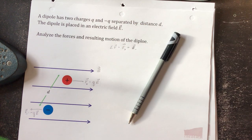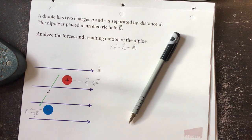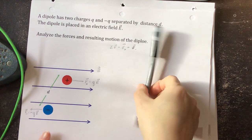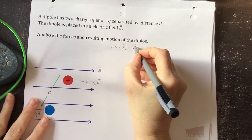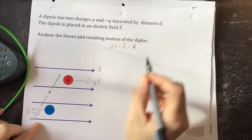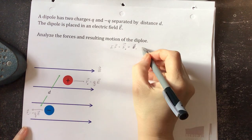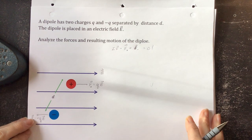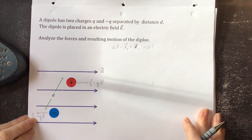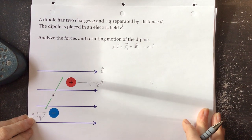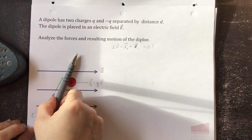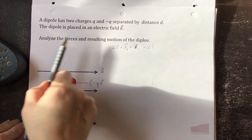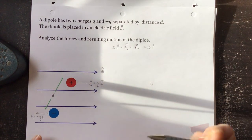So if we want to think about the resulting motion and do a force analysis, let's find the net force — the force on the positive plus the force on the negative. Those two are equal and opposite, so it just equals zero. What does it mean that the net force is zero? It means overall that our dipole is not going to move left or right — it's not going to translate.